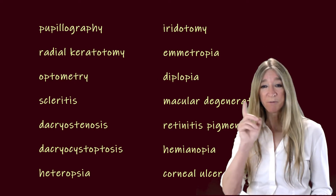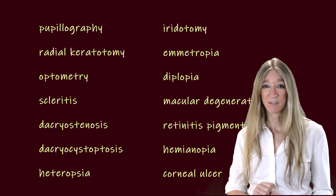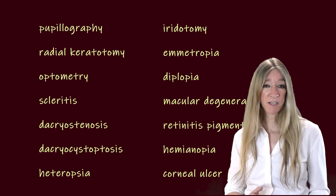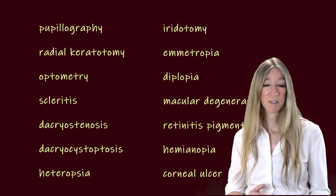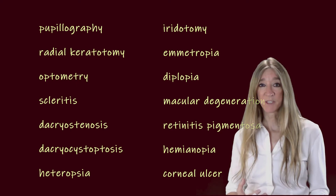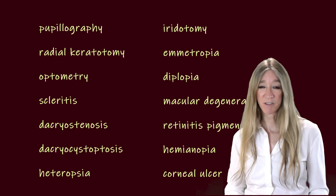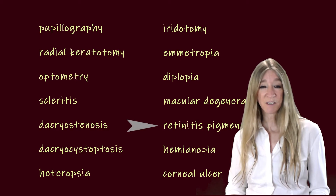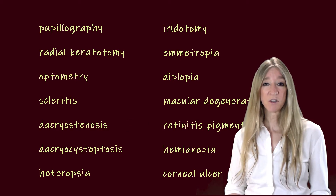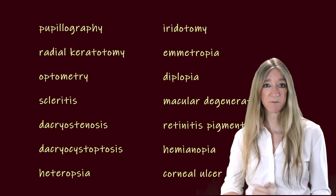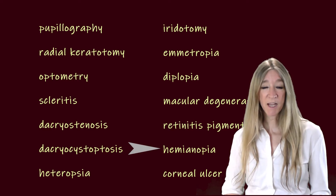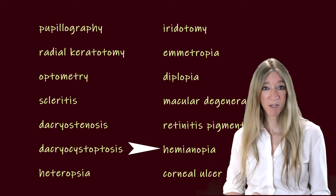How about a term for different vision in each eye? Heteropsia. How about a term when the macula degrades and its function fails? Macular degeneration. How about an eye disease that involves inflammation and discoloration of the retina? Retinitis pigmentosa. How about a term for loss of sight in half your field of vision, as if from a stroke? Hemianopia — half, no, vision — hemianopia.